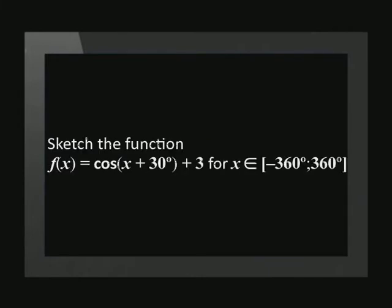Our first example asks us to sketch the function f of x equals cos in brackets x plus 30 degrees plus 3, where x is an element of negative 360 to positive 360.